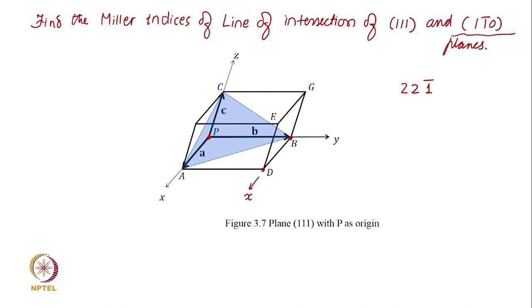So D is a point on my plane. This is my origin, this is a point on the plane because it is cutting at 1 on the x axis. On the y axis it is cutting minus 1, so this is another point on the plane.